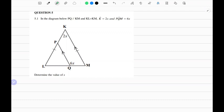So let me welcome you all to this video. The question goes as follows: In the diagram below, PQ is parallel to KM, KL is equal to KM, and we're given angle K to be 2X and angle PQM is 6X. The question wants us to determine the value of X.